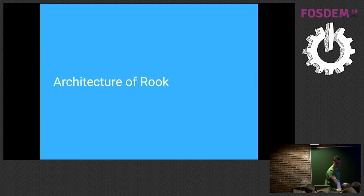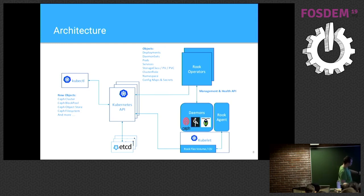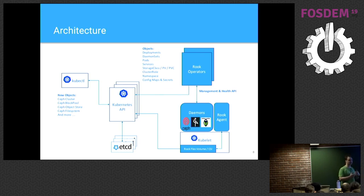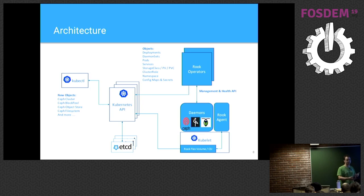The architecture of Rook goes a bit into Kubernetes. We have the Kubernetes API, a client utility to talk with it, and Kubernetes uses etcd for the data store of API objects. Starting from there, we use our client utility to tell the Kubernetes API about these new objects, so we end up with objects like Ceph cluster, Ceph block pool, Ceph object store, Ceph file system — and for the other operators, obviously those too.